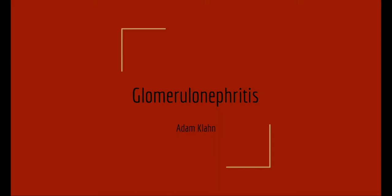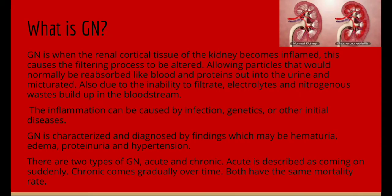My topic is glomerulonephritis. By just looking at the name, we can already tell that this will be inflammation of the glomerulus and the nephron. GN is when the renal cortical tissue of the kidney becomes inflamed. This causes the filtering process to be altered, allowing particles that would normally be reabsorbed, like blood and proteins, out into the urine. Also, due to the inability to filtrate, electrolytes and nitrogenous waste build up in the bloodstream.